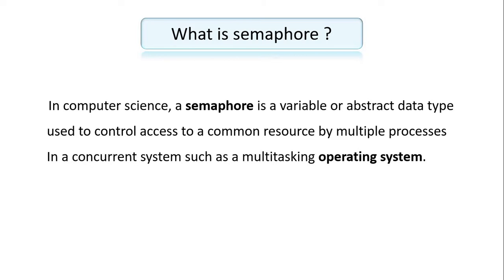First, let's know what a Semaphore is. In computer science, a Semaphore is a variable or abstract data type used to control access to common resources by multiple processes in a concurrent system such as a multitasking operating system. When we have the operating system with processes, these processes maintain rules so that they have opportunities to be successful. This is the basic knowledge.